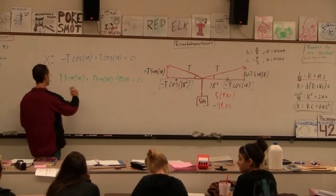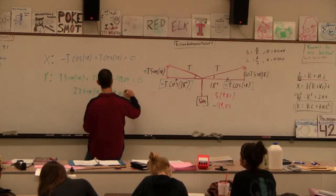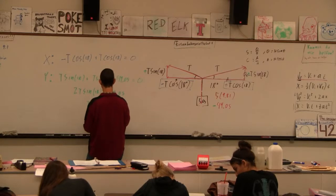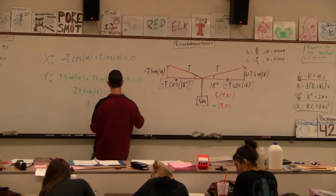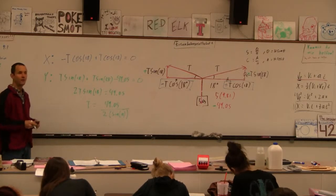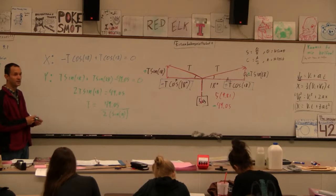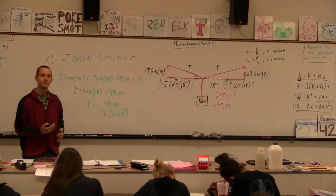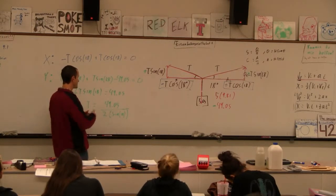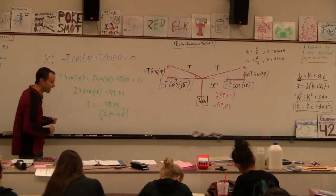This thing, I can rewrite this guy as 2T sine 18 equals 49.05. And then finally, T is equal to 49.05 divided by 2. This is the part where I would not want you to talk as well. So that's 49.05 divided by 2 divided by sine of 18. Do that with your calculator right now. Take your calculator and try to do it with one step. Don't go divided by 2 and or divided by sine of 18. You might want to use parentheses around this whole denominator.